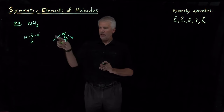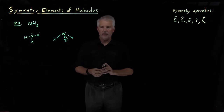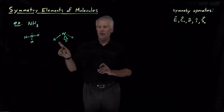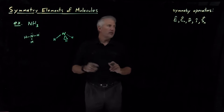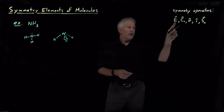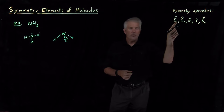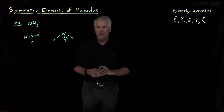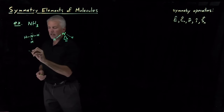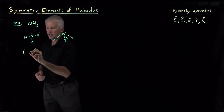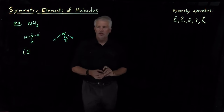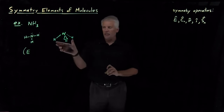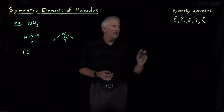That's what the molecule looks like three-dimensionally. Now we just need to ask ourselves about the symmetry elements. Does it have a symmetry element that corresponds to the identity operator? And of course the answer is yes. So here's the list of symmetry elements — it has an identity operator, which leaves the molecule unmodified.